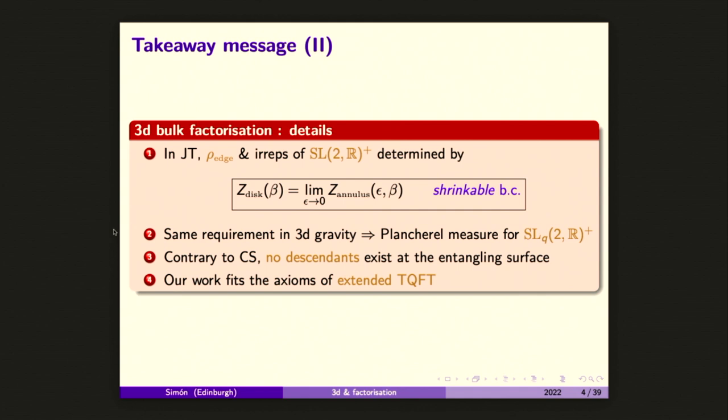It's this condition that was proposed, if I am not wrong, for the first time by Donnelly and Wong, which says that if I compute an annulus partition function and I take the limit of removing one of the holes in the annulus — which is this epsilon modular parameter — if I take this to zero, I should recover this partition function. That's a well-defined calculation that you can compute in JT. From this condition, you extract a non-trivial density of edge states and the group under which they transform.